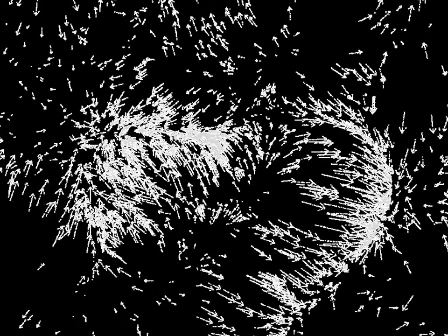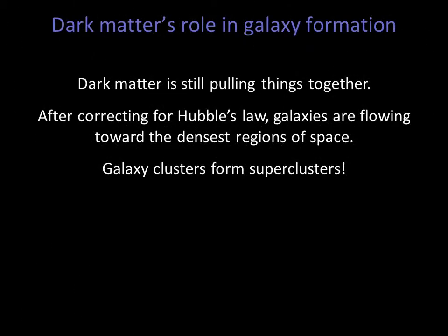The arrows on this diagram indicate the motions of individual galaxies over a space of hundreds of millions of light years. We can see that the galaxies flow into regions where the density of galaxies is already high. It's dark matter that helps pull galaxies together. We call the resulting vast, high-density regions superclusters.